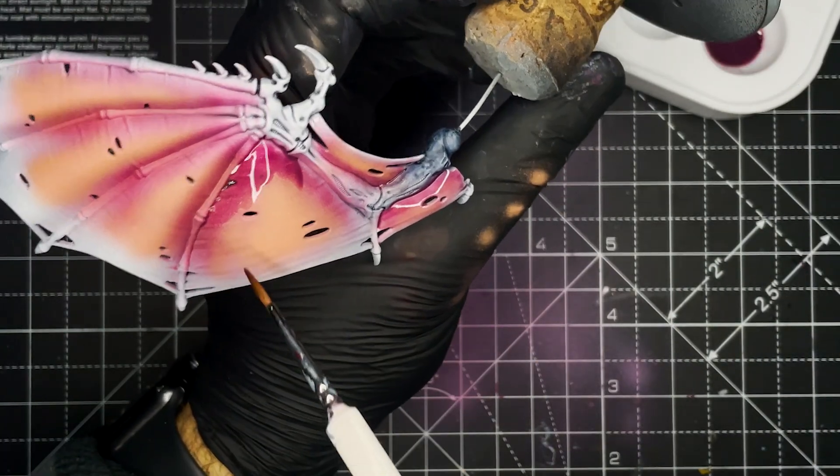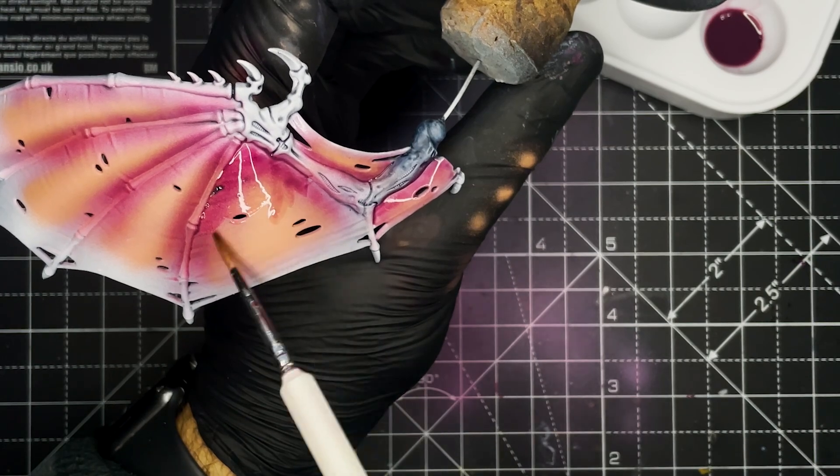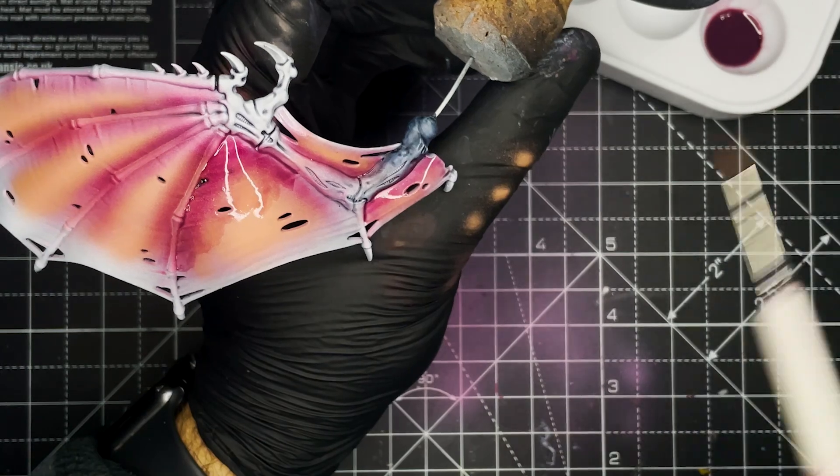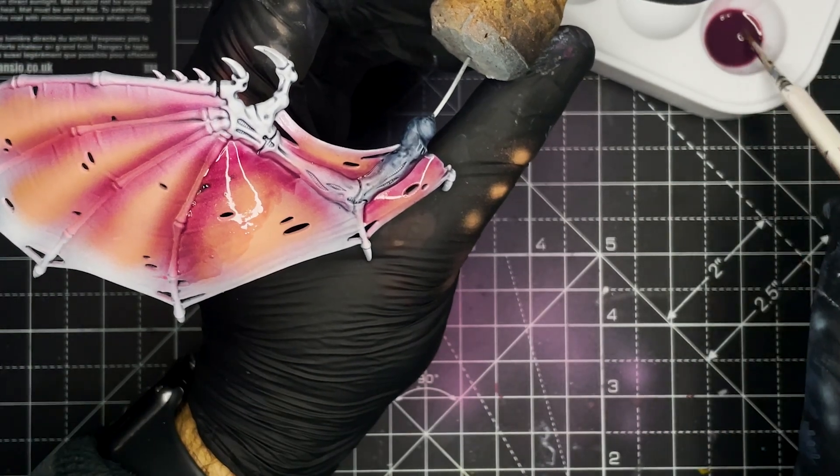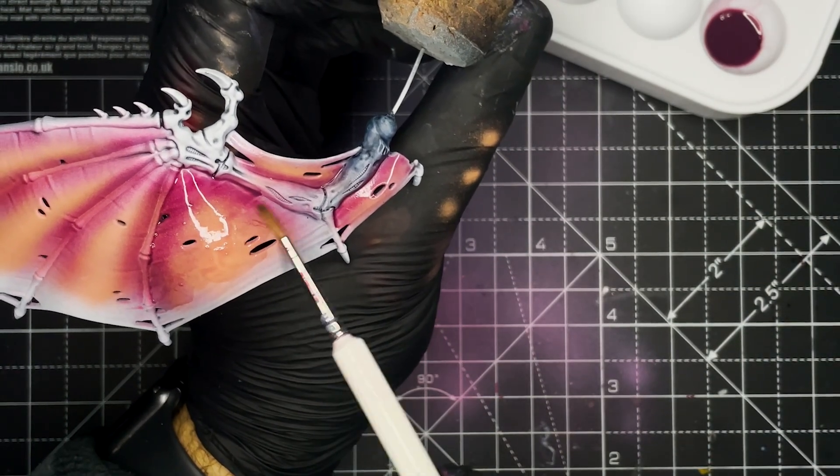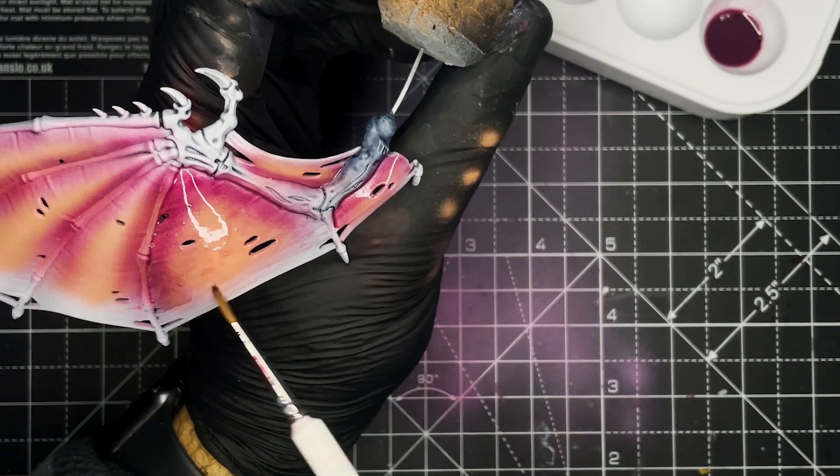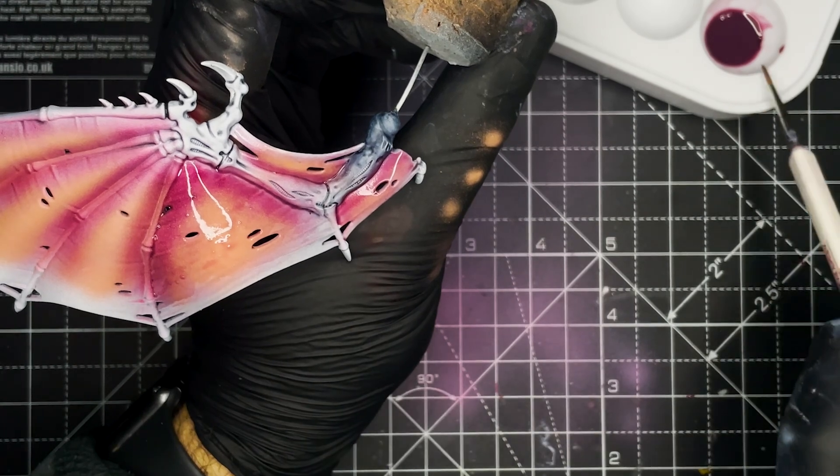Next I went in with a layer of shade to try and tie in the previous highlight layer, and to do that I used Citadel Shade Carroburg Crimson mixed in 1 to 4 with glaze medium. And we just want to make sure we've got a nice and thin mix here and then just apply it over the entire winged area of the model.